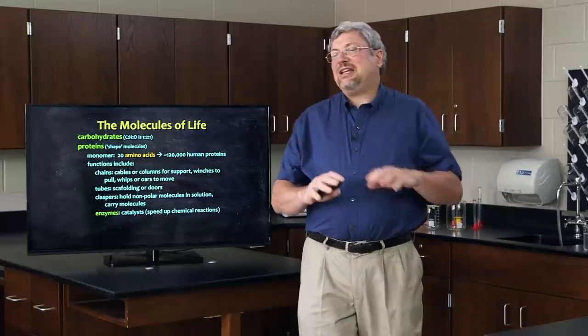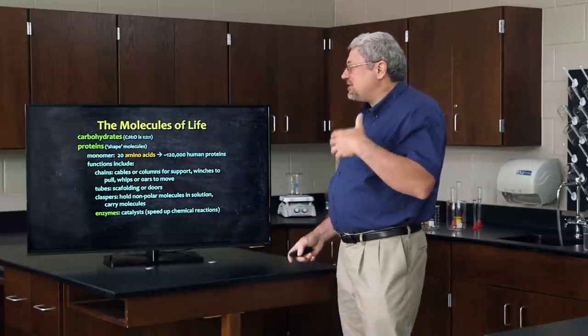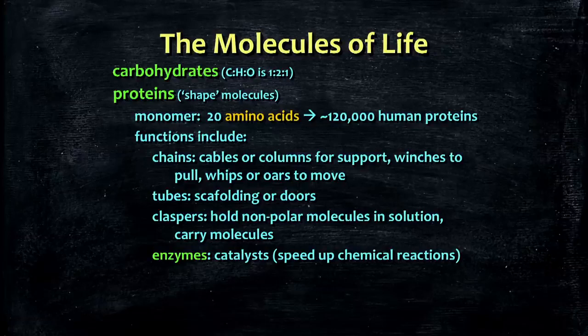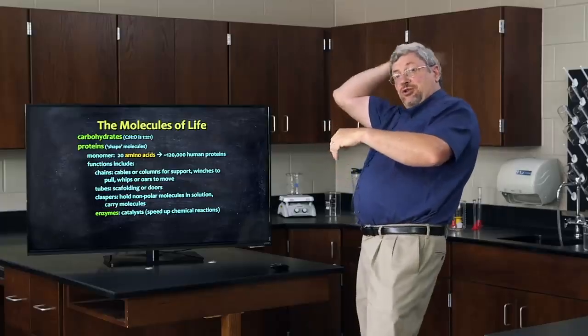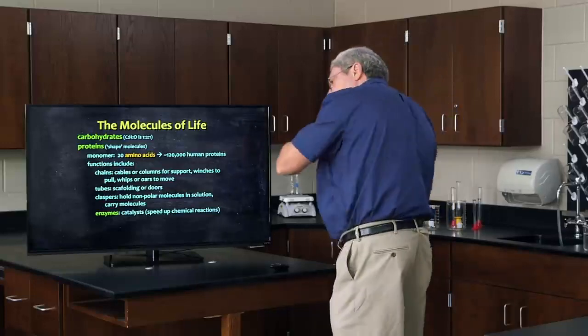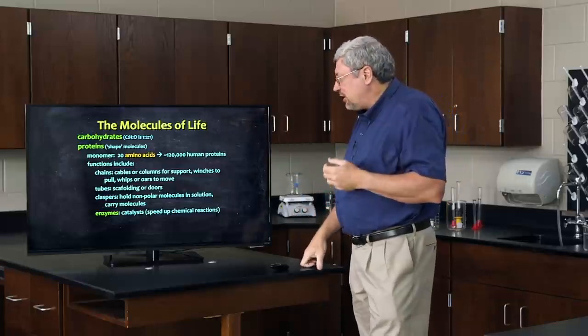Proteins have all sorts of functions. Anything requiring a shape is probably using a protein. Inside a cell, proteins act as ropes to lasso and move objects, as cables, columns, and support structures holding organelles in place. They function as winches to pull things in. They are used as oars to move a cell through water, and flagella — whip-like propellers that move cells — are made of proteins. We also have protein doors in cells that can open and close.